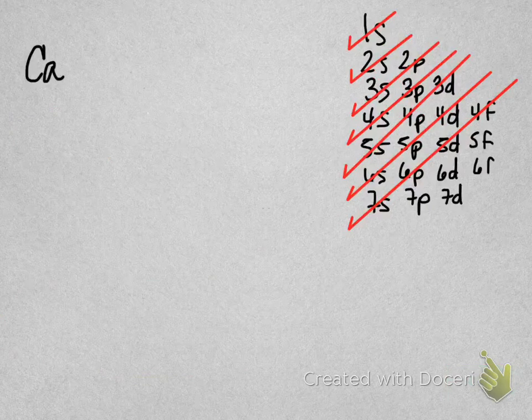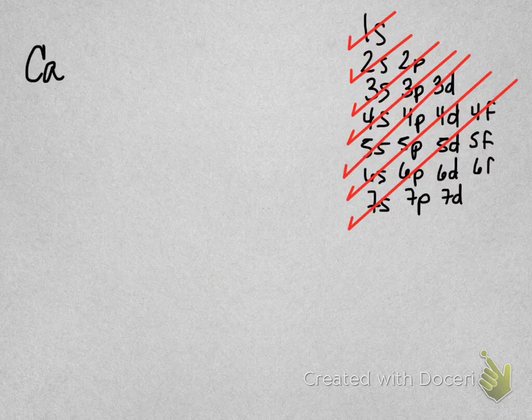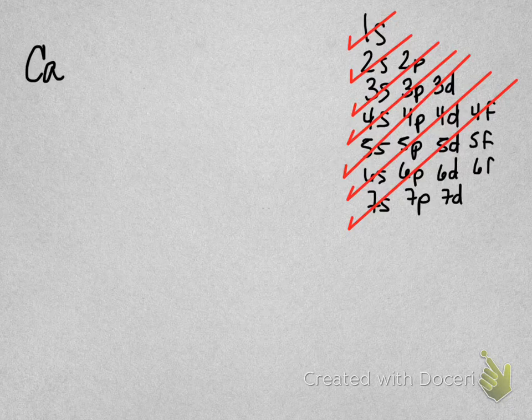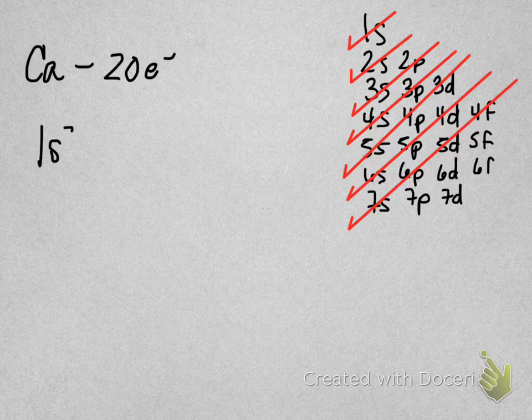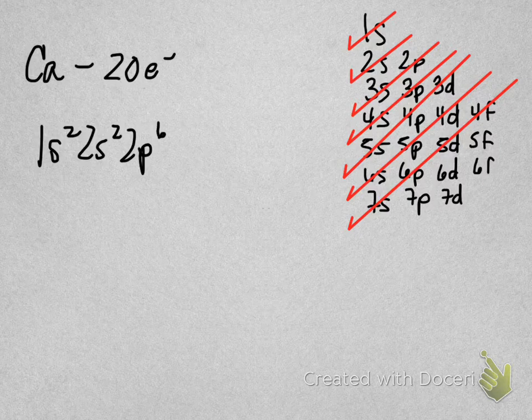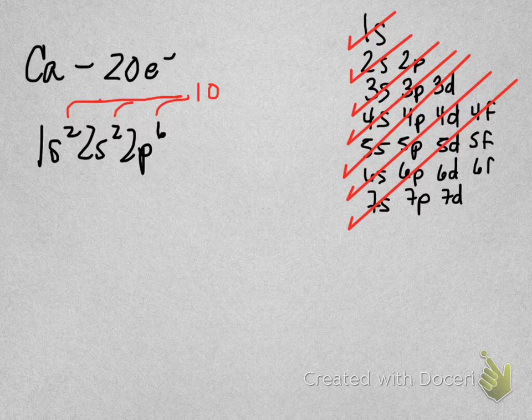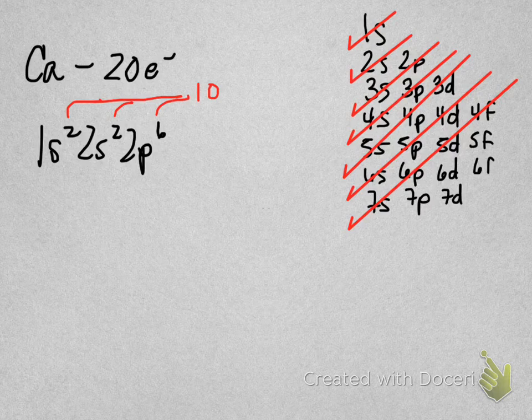Okay, well let's start trying to do one of these without doing the orbital notation first. Let's pick calcium, Ca. It's got 20 electrons. So I'm going to go ahead and write 1s2, 2s2, 2p6, well right there I know that I have how many electrons? 10! I'm up to 10 electrons. I'm just adding those superscripts. So I know I have 10 electrons, I know that I have 10 more electrons to add.